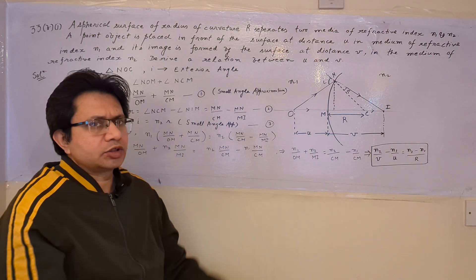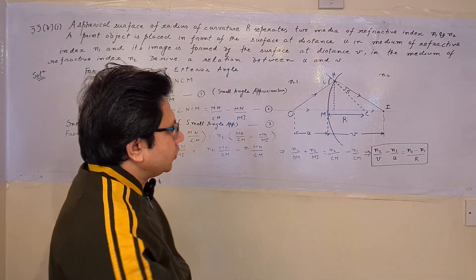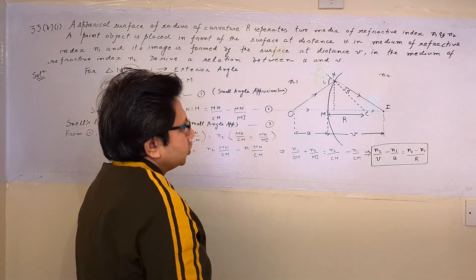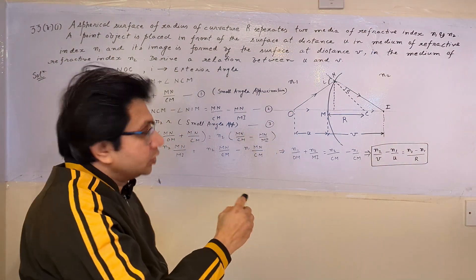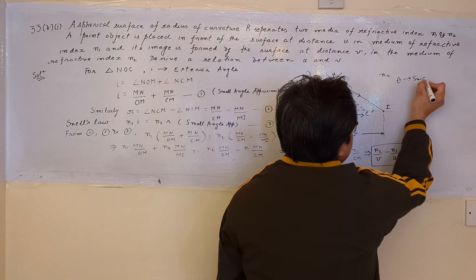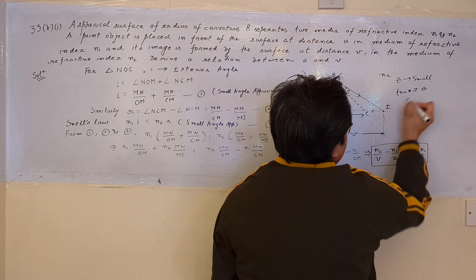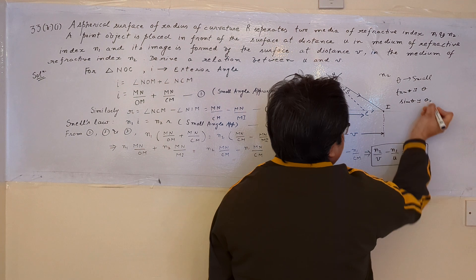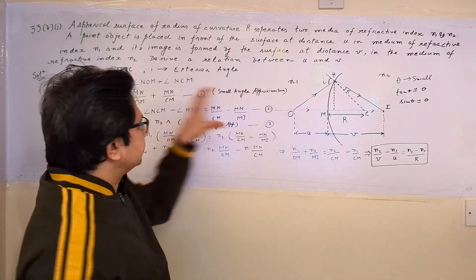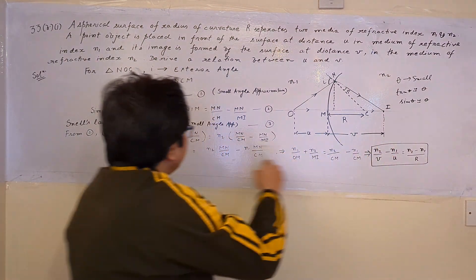We have to use certain approximations. We use the small angle approximation, which states that if theta is small, then tan theta is nearly equal to theta, and sin theta is nearly equal to theta. We use the tan theta expression for equations 1 and 2, and the sin theta approximation for Snell's law.